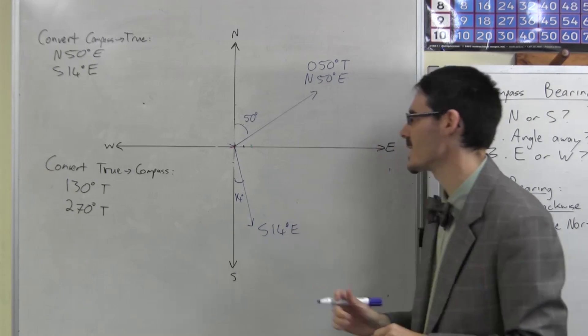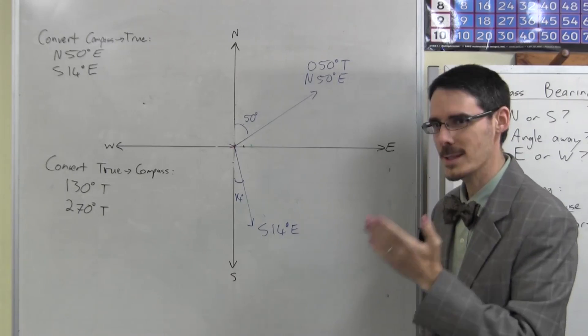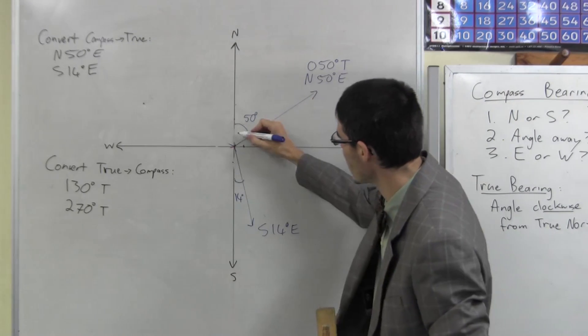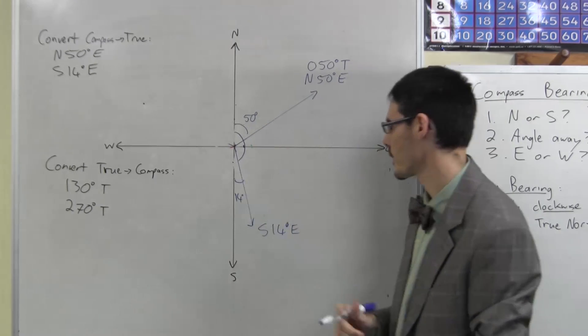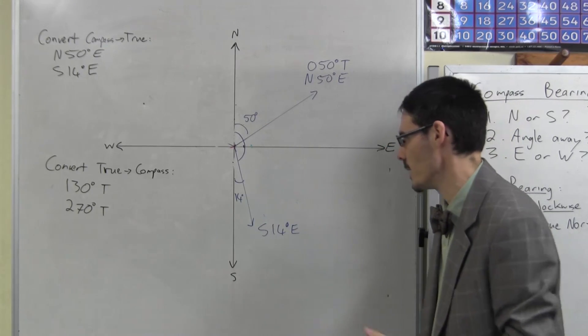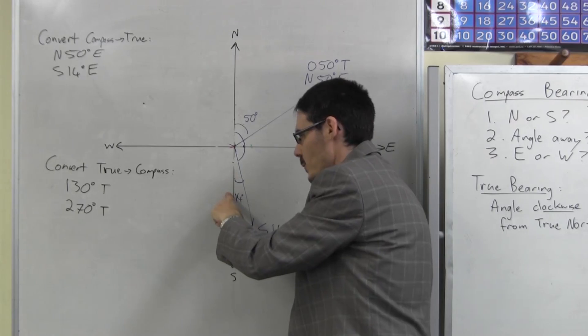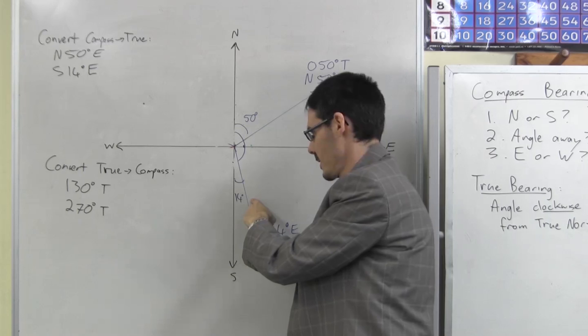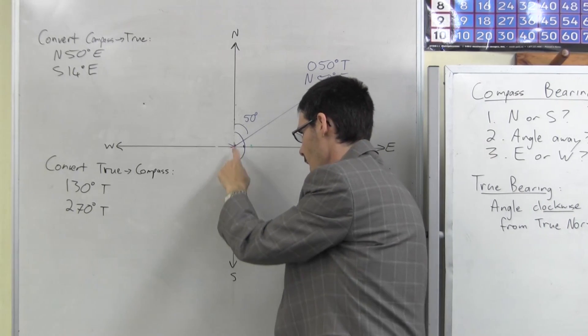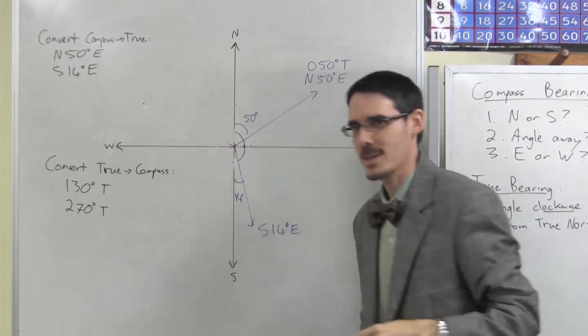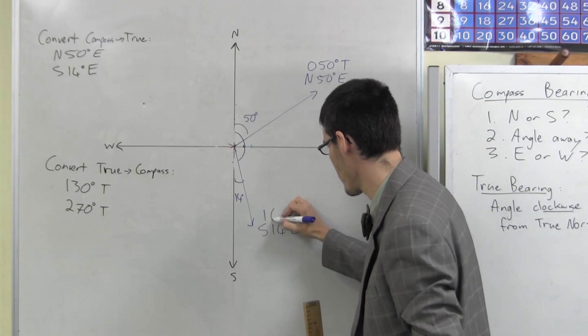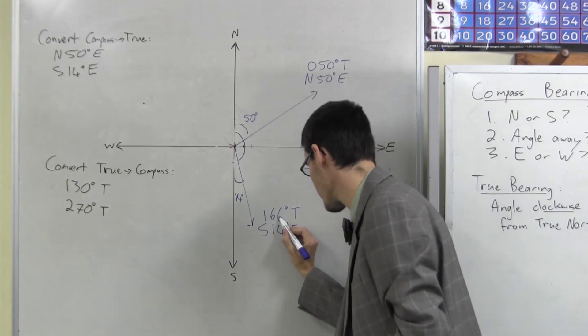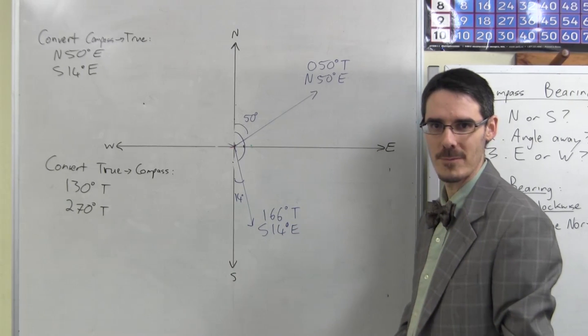But what I need is a true bearing. What's the angle measured clockwise from north? I need this angle here. Well, all the way to south would be 180 degrees. Take away that 14. So that would be 180 minus 14, 166 degrees. That is a true bearing. 166. Pretty easy.